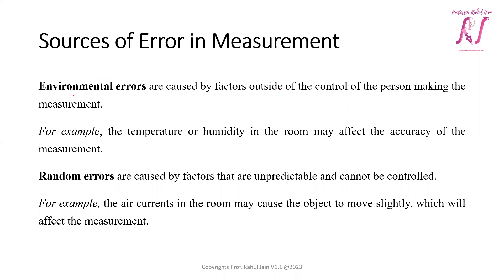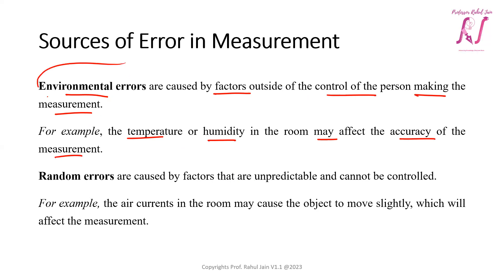Environmental errors are caused by factors outside the control of the person or researcher making the measurement. For example, the temperature or humidity of the room may affect the accuracy of the measurement, and that is out of the person's control.